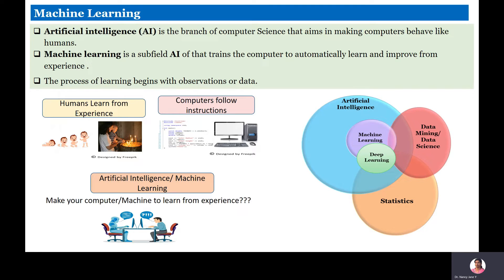Artificial intelligence is a branch of computer science. There is a set of techniques and methods that make machines and computers think like human beings. Machine learning, deep learning, and data mining are the subfields of AI. These three are interdisciplinary fields in which we build AI applications.